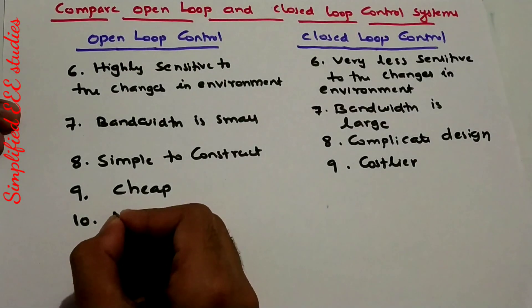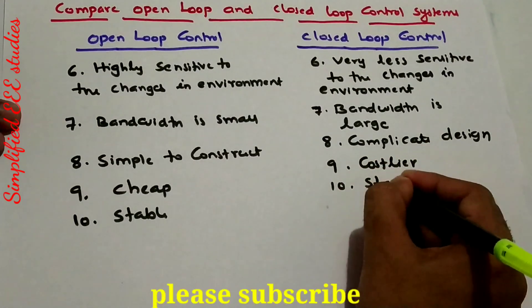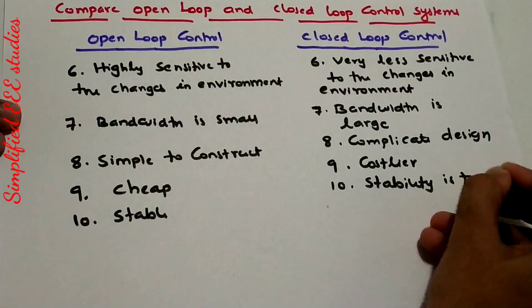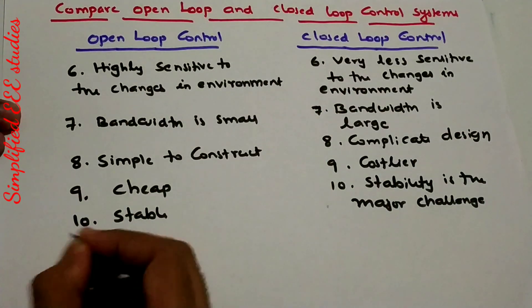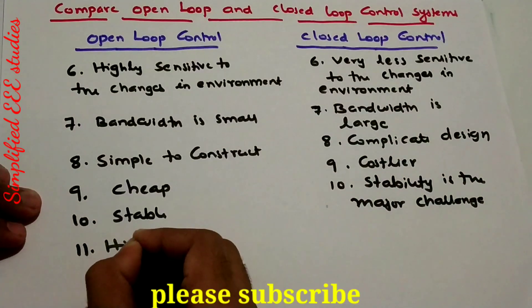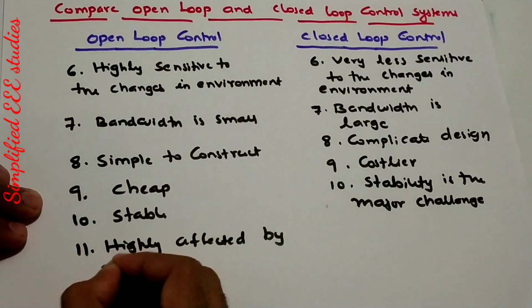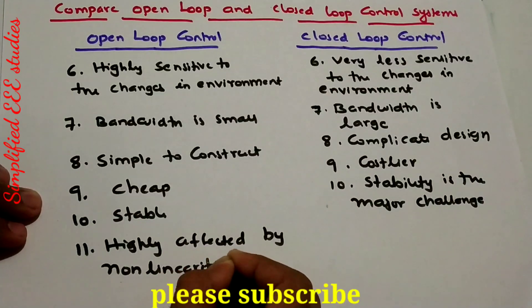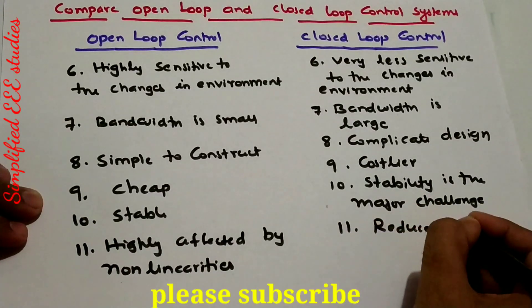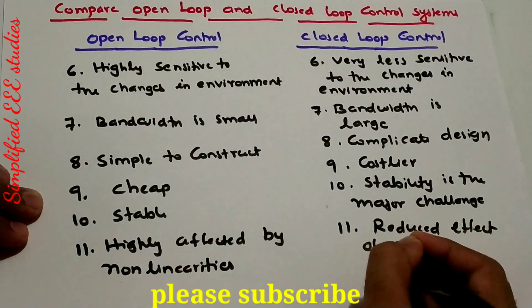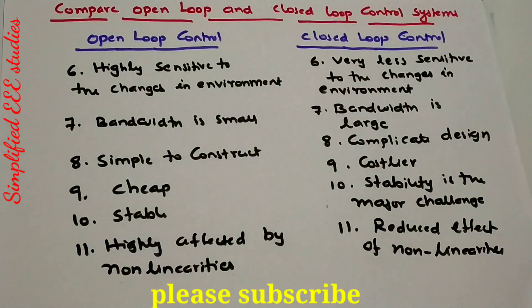Tenth point: open loop control is stable, but stability is the major challenge in closed loop control system. Eleventh point: open loop system is highly affected by non-linearities, whereas in closed loop control system there is a reduced effect of non-linearities. I will explain what non-linearities are afterwards — there are a lot of them, and I will be explaining them later.